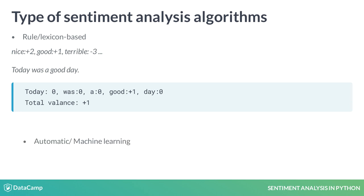A second category is automated systems, which are based on machine learning. This is going to be our focus in this course. The task is usually modeled as a classification problem where, using some historical data with known sentiment, we need to predict the sentiment of a new piece of text.